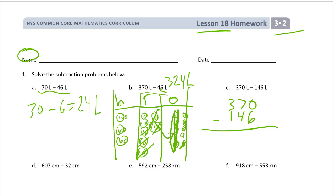Here we don't have enough ones. Don't subtract up and write six here — it's not six minus nothing. You have to think there are no ones there, so you have to unbundle a ten like we did in the picture. Six tens will be left, and we'll have ten ones. Now we can subtract: ten minus six is four, six minus four is two tens, and three hundreds minus one hundred is two hundreds. And these are liters.